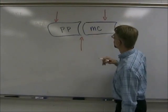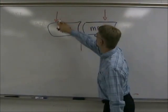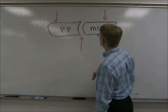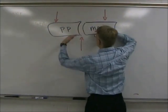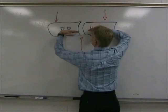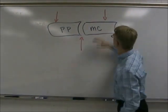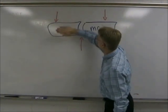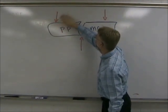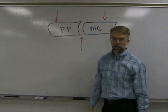Those three points of pressure, if they are immovable, will prevent this proximal phalanx, or the metacarpal relatively, from extending. With pressure here, here, and here, there's no way for this proximal phalanx to come back and hyperextend at all.